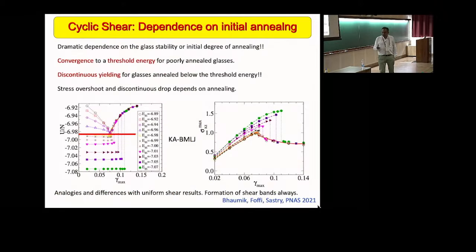The dependence of the yielding behavior on the initial annealing, or in simple words, the initial energy of the glass, is shown over a much wider range of initial conditions here. One sees that across a certain threshold energy, the nature of the yielding transition changes from what looks close to a continuous transition to something that looks increasingly more discontinuous. This is also reflected in the stress strain curves. This is also something that we're going to keep in mind.